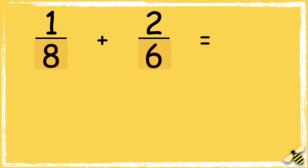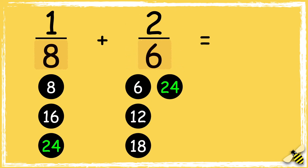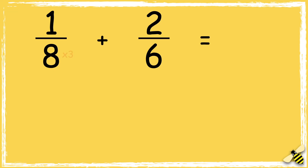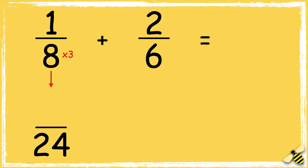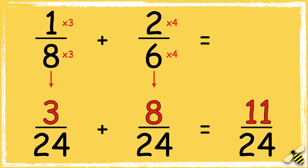Let's look at the multiples of 8 and 6. 24 is the lowest common multiple, so I can make both denominators 24. We need to multiply 8 by 3 to get 24, so we also multiply the numerator by 3 — 1 times 3 is 3. Then multiply 6 by 4 to get 24, so we also multiply the numerator by 4 — 2 times 4 is 8. Now that our denominators are the same, we can add the numerators: 3 add 8 equals 11, so the answer is 11 twenty-fourths.